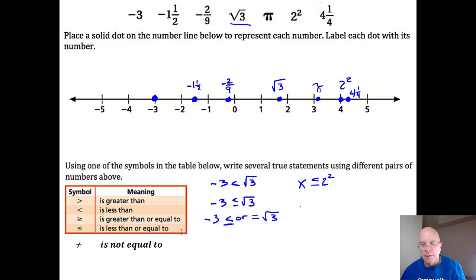You could pick any two of these, like you could say pi is not equal to negative two ninths. There's an inequality. Any comparison where they're not equal, you're either going to have less than, greater than, less than, greater than or equal to, less than or equal to, or not equal to. Those are inequalities.